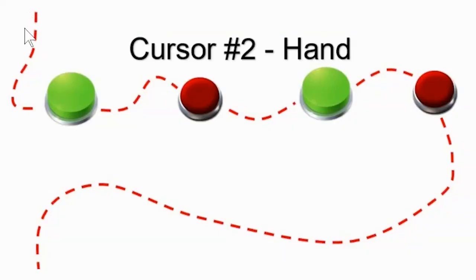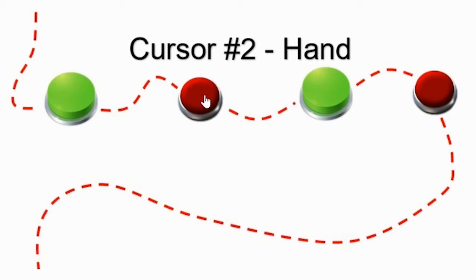With certain buttons, but not all, your cursor will transform into a pointing hand. This indicates that there is a button where you have your cursor that you can click. If you are looking for buttons on an internet page to take you to another page, this can be very useful to help you discover options.